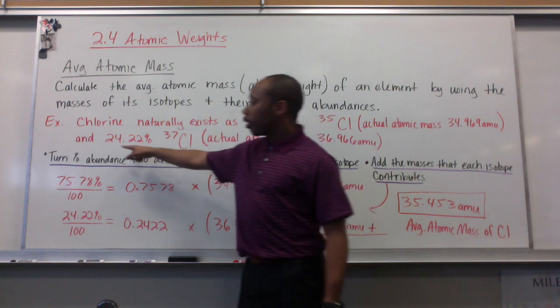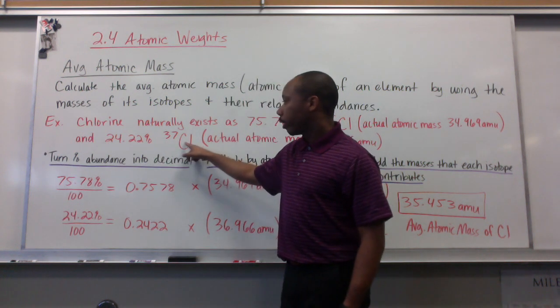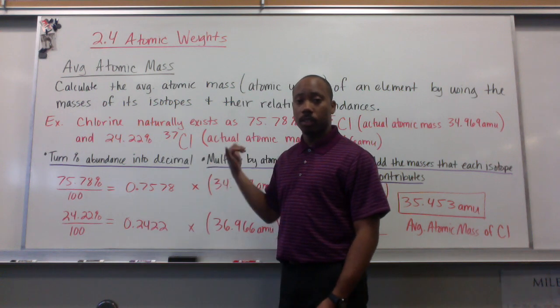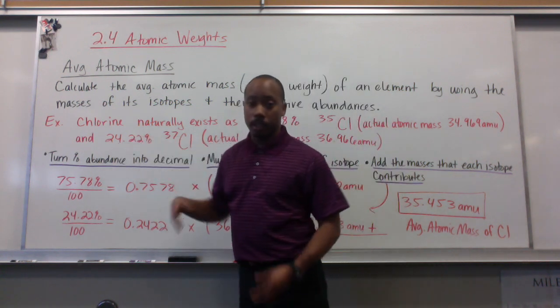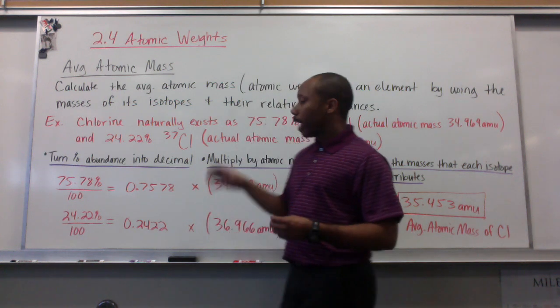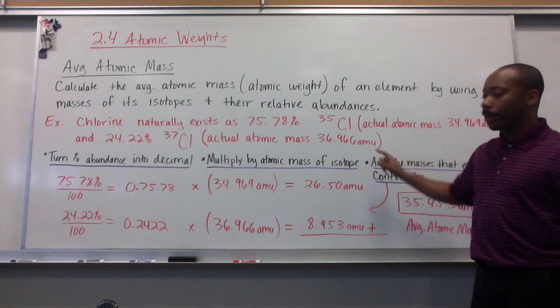And the other 24.22% would be chlorine atoms with a mass of 37. These are two isotopes of each other. These percentages are their relative abundances. The actual mass of chlorine-37 would be 36.966 AMU.